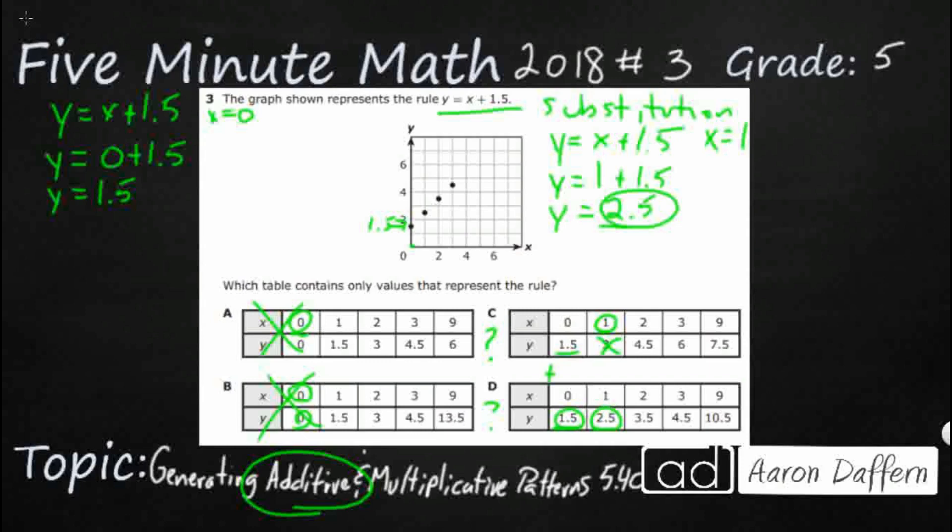We've got plus 1.5 plus 1.5. Looking good there. Let's look at this next one. Let's say y equals x plus 1.5. And in this case, we're going to make x equal 2. And so, let's substitute in that 2 right there. We're going to say 2 plus 1.5. 2 plus 1.5 is going to be 3.5.